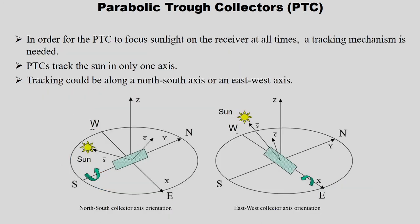Sun tracking can be done either via north-south or east-west orientation. As stated earlier, this lecture will not go into detail about the tracking system and optical system — we are concentrating only on the thermal aspects. For in-depth details, you are requested to refer to the references provided.